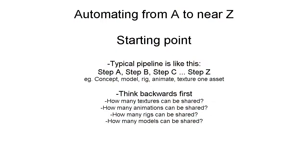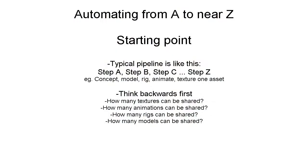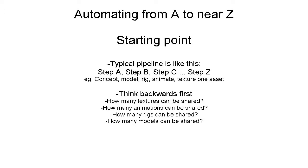Before every shot, a decision was made about which effect it needed to have, and a single locator was placed for that. Then all the effects were generated automatically.